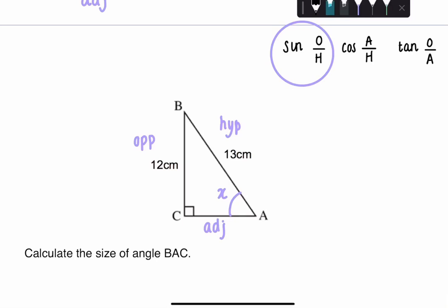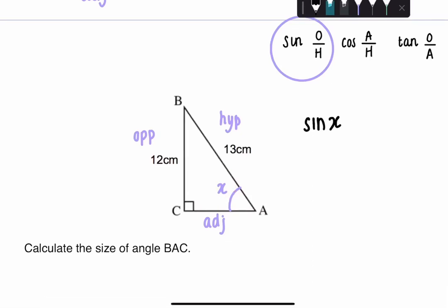And then how you write this is sine of X, where X is our unknown angle, equals. So remember the definition is O over H. Opposite is actually 12 centimeters in this case, I want to put 12, divided by H refers to hypotenuse, which in this case is 13. So 12 over 13.